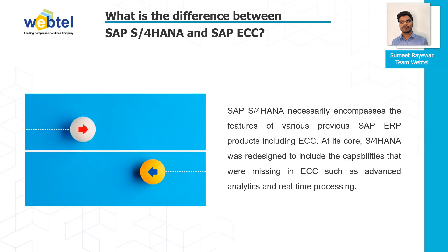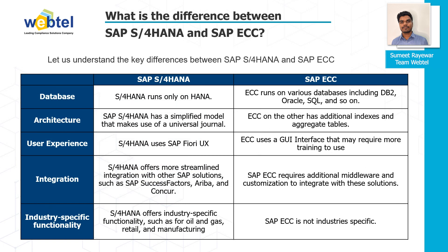What is the difference between SAP S4 HANA and SAP ECC? SAP S4 HANA encompasses the features of various previous SAP ERP products including ECC as its core. SAP S4 HANA was redesigned to include capabilities that were missing in ECC, such as advanced analytics and real-time processing. Regarding database: S4 HANA runs only on HANA, while ECC runs on various databases like Oracle, SQL, and so on.